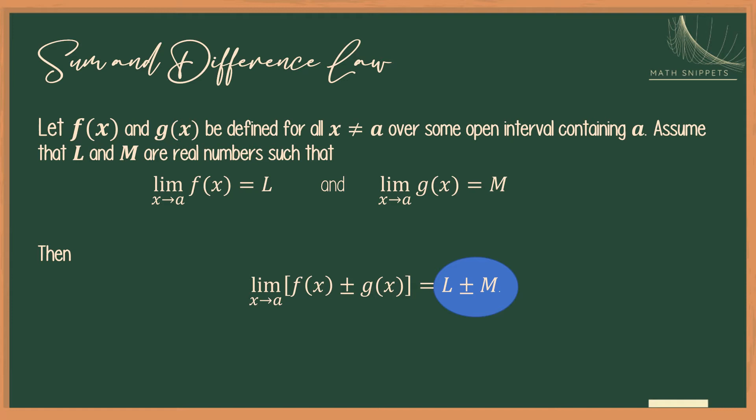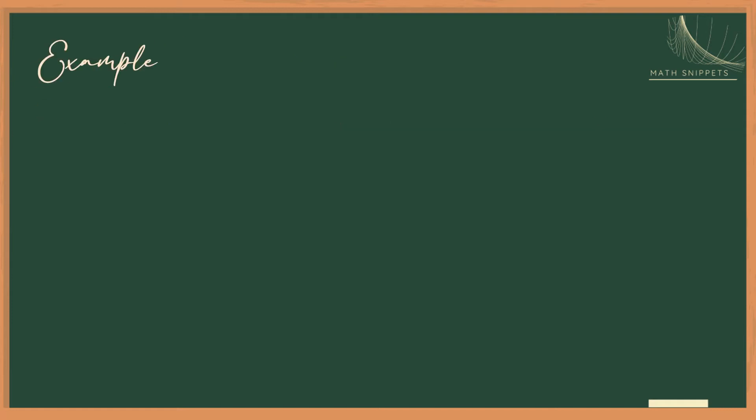So we'll illustrate it through some examples. Consider x plus 7 as x approaches negative 1. So what will we do? We will use the sum law, meaning we will distribute the limit to x plus 7. So we have the limit of x plus the limit of 7 as x approaches negative 1.